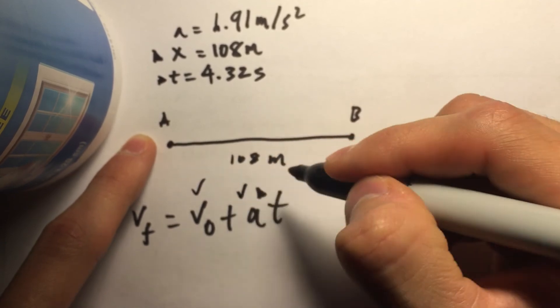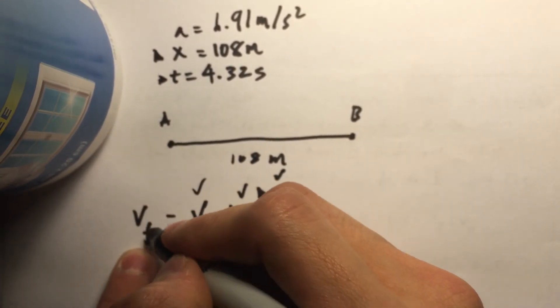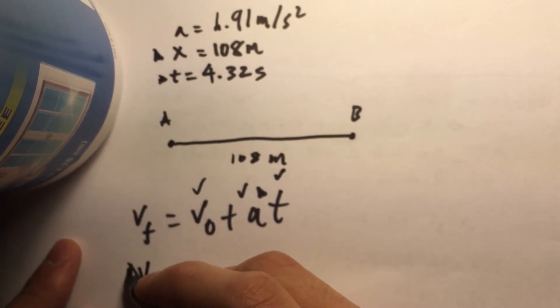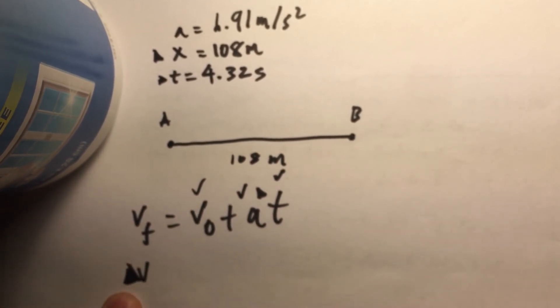So we know this, we know acceleration, we know time, and we want, and we know our velocity, or we know that that's what we need to find because the problem asked for change in V, delta V.